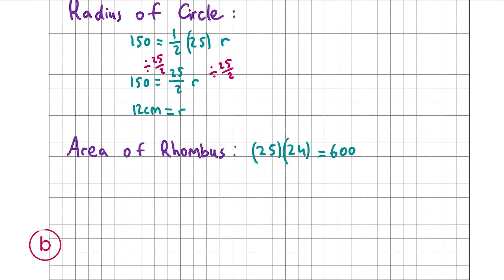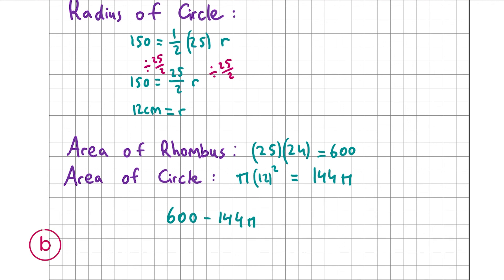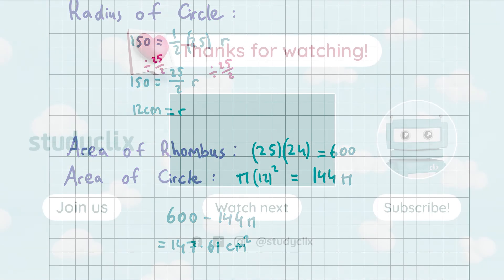The area of the circle is pi r squared, which is pi times 12 squared, giving 144 pi. So the shaded area is 600 minus 144 pi, which gives approximately 147.61 centimeters squared. That's the answer to B part 2 and the final part of the question. Thank you very much for watching — I hope this helped.